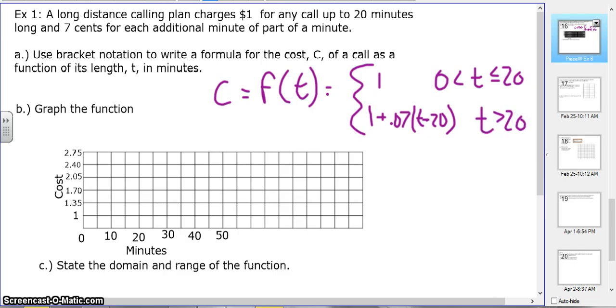Let me try to explain it so it makes more sense. Let's say I have a call and it's 21 minutes long. 21 minutes means I have $1 plus 21 minus 20 minutes is one extra minute times 7 cents, which would be $1.07. So hopefully that makes sense.